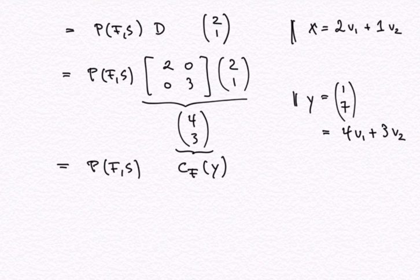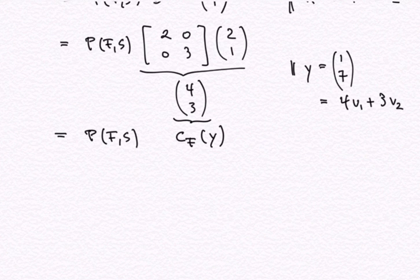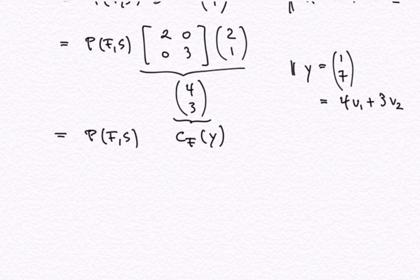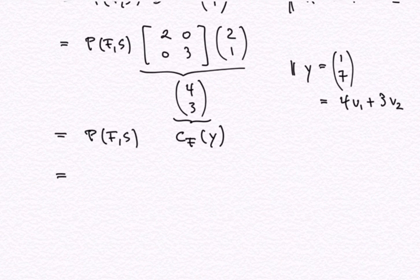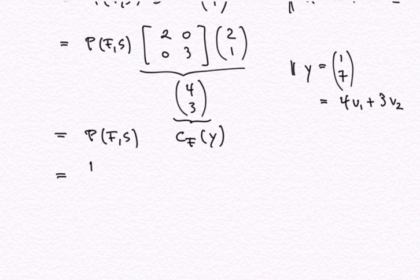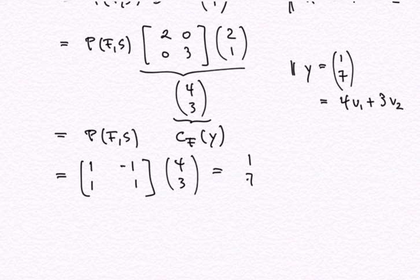So now I have the F coordinates of y. I have applied the linear mapping associated to the matrix A, but in the F-world — not in the standard world, but in the world given by the F coordinate system. In the F coordinate system it's particularly easy, because all I need to do is multiply the entries by the diagonal elements: 2 times 2 and 3 times 1. But that only gives me the F coordinates of y, and of course I'm interested in the standard coordinates of y. To get those, I multiply the F coordinates by the basis change matrix from F to S: [1, -1; 1, 1] times (4, 3), and I get (1, 7), which is our vector y in standard coordinates.